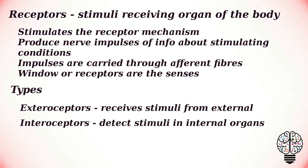Exteroceptors detect stimuli from the external environment, while interoceptors detect stimuli in internal organs. Interoceptors are related to the visceral organs of the body such as the lungs, intestines, and heart. These get stimulated from changes taking place in our internal organs and produce sensations of changes occurring in our internal environment.